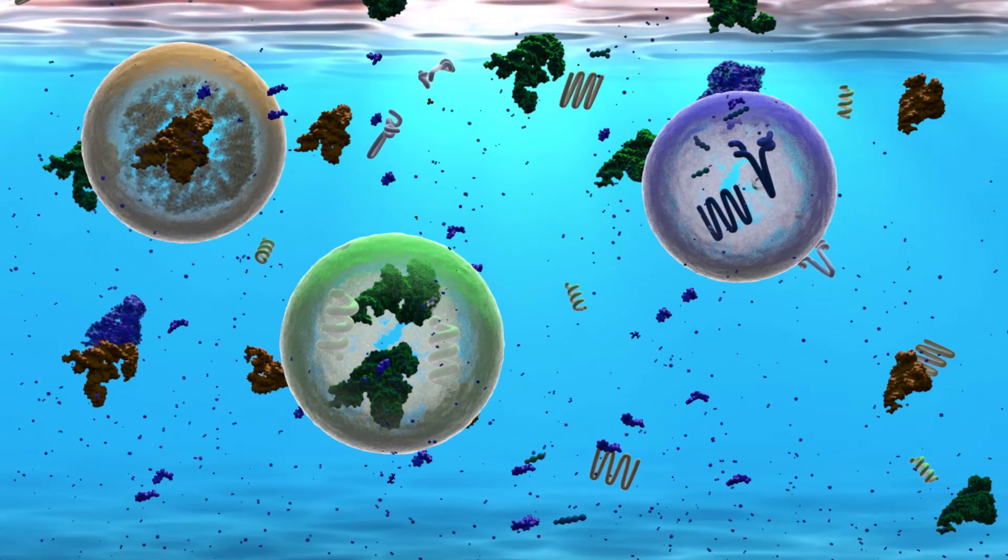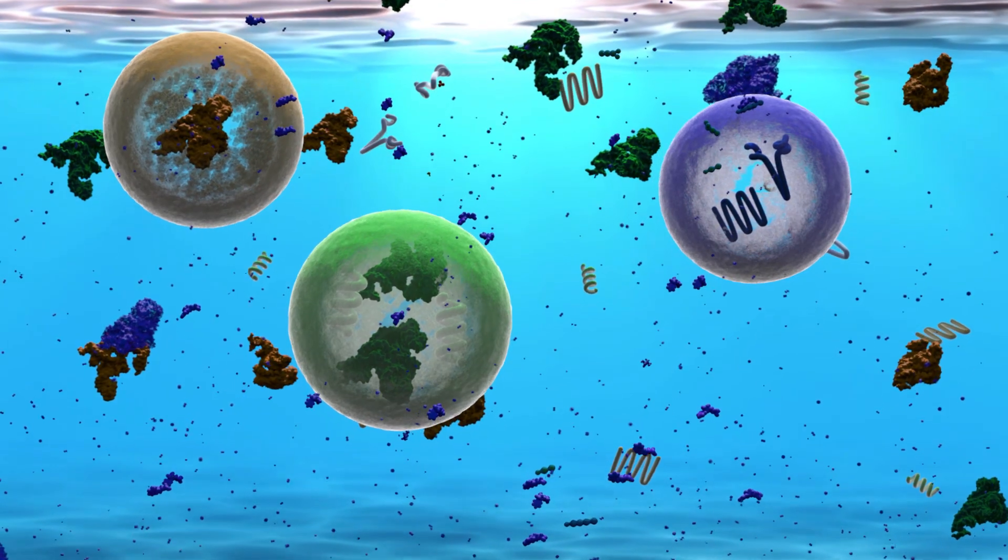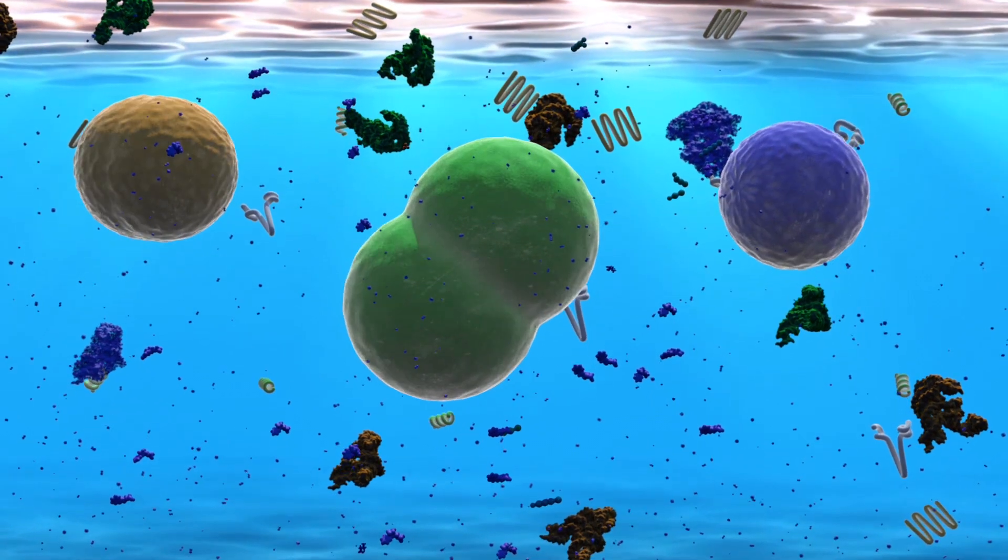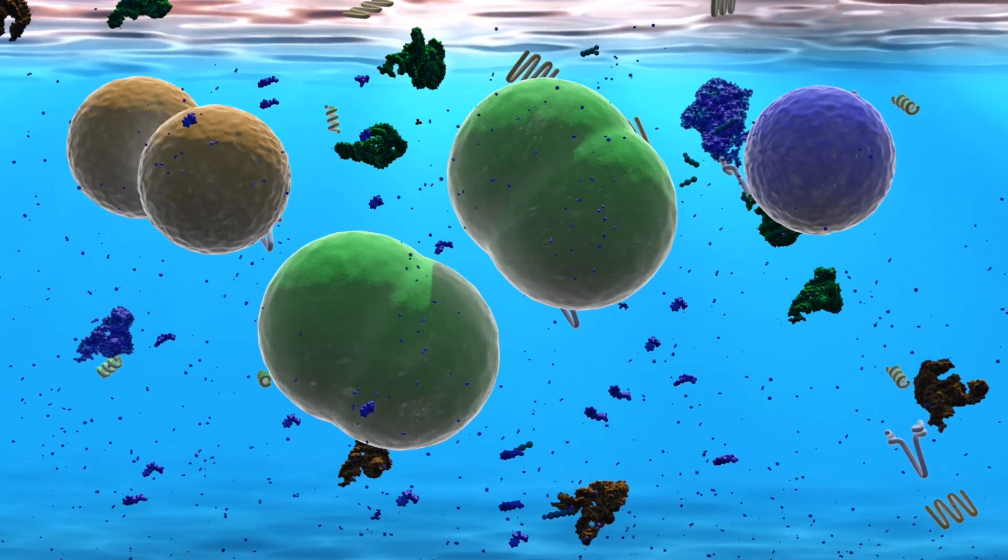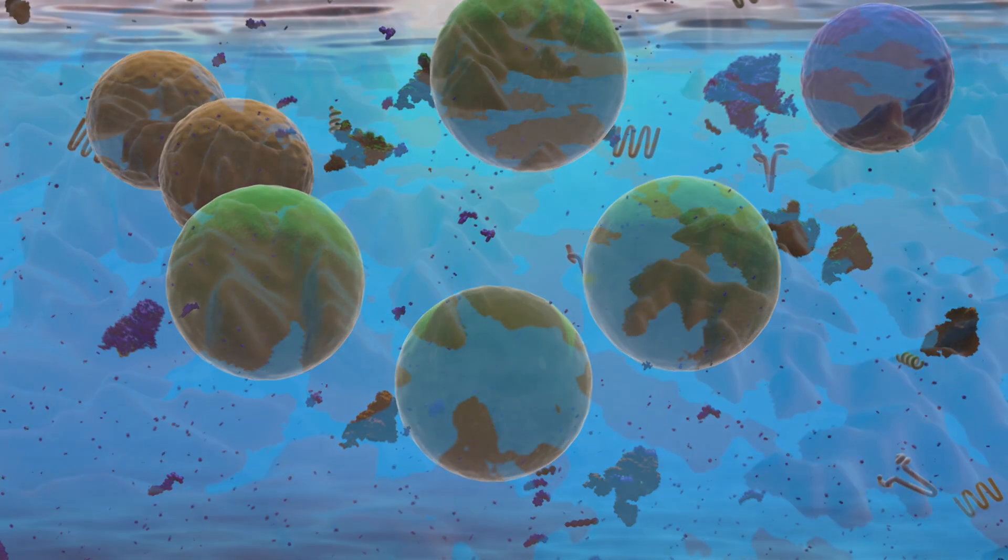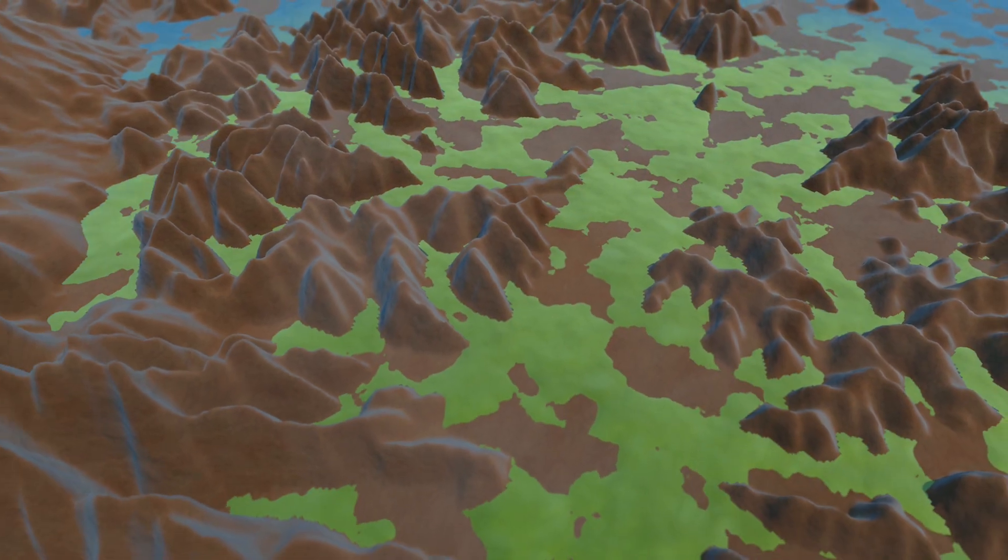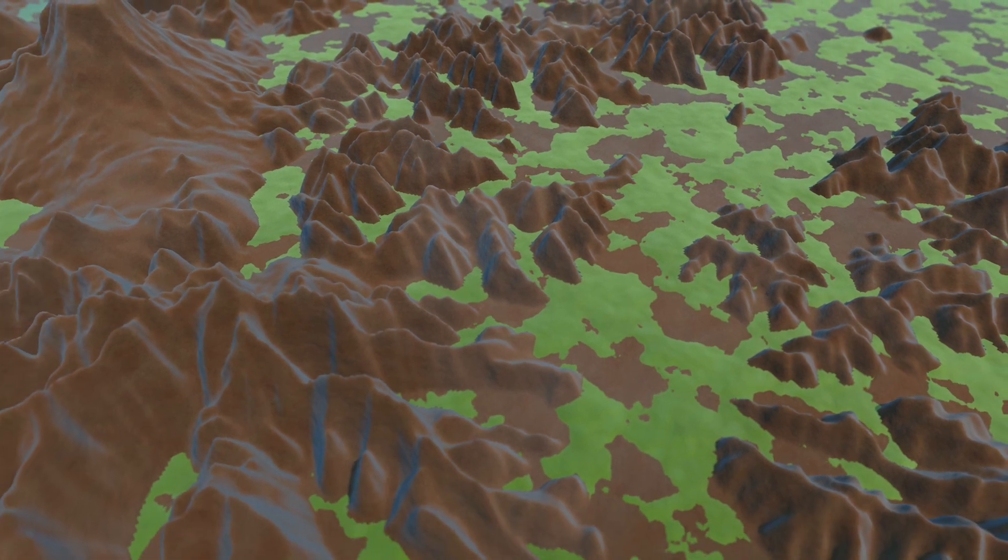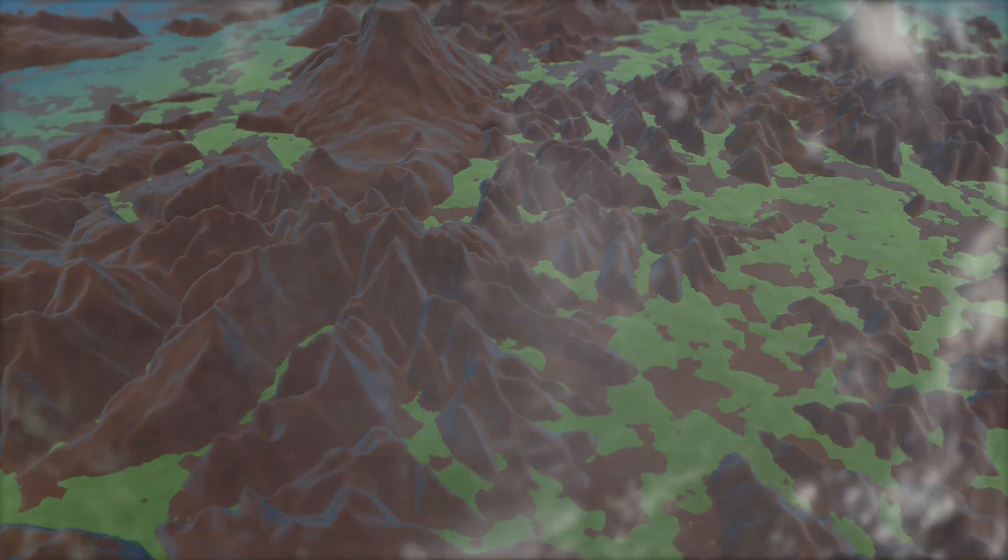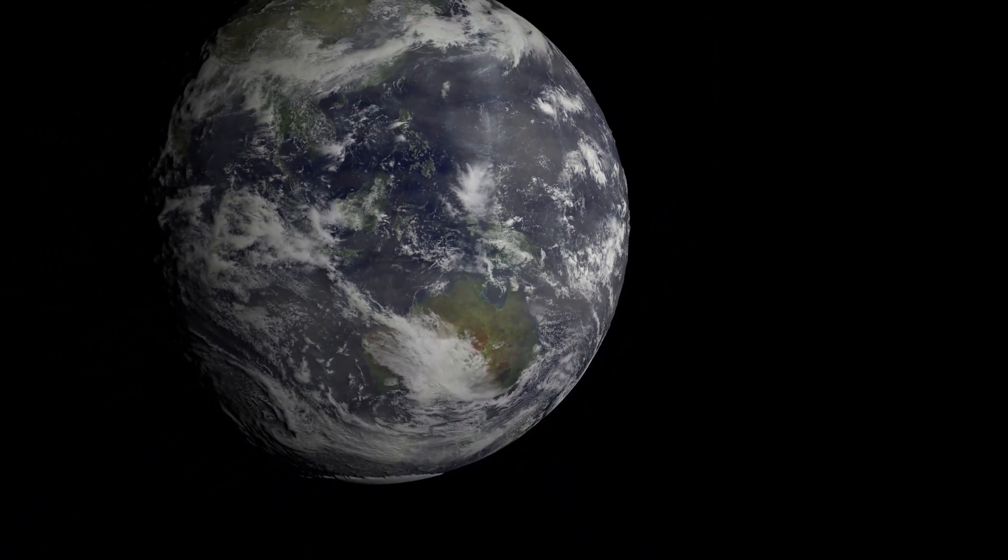Some of these sets of biomolecules would have been capable of making new building blocks, copying their components, and allowing the protocells to grow and divide. The best protocells would have out-competed their neighbors for scarce resources, adapting to new environments and spreading out across the early Earth.